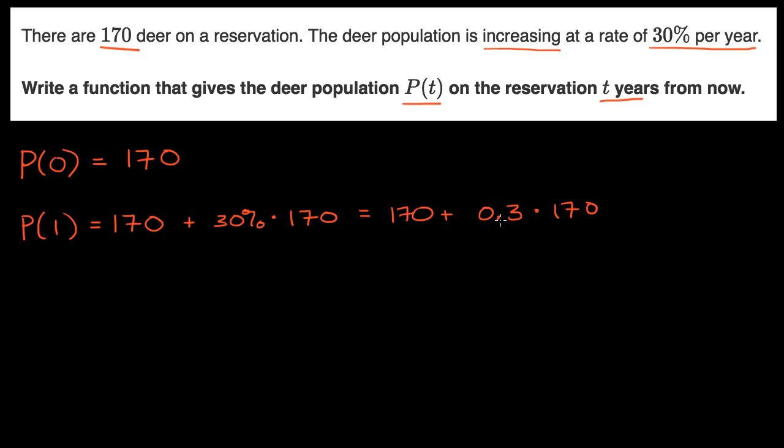30% as a decimal is the same thing as 30 hundredths or three-tenths. Or I could write this as if I factor out a 170, I would get 170 times 1 plus 0.3, which is the same thing as 170 times 1.03.